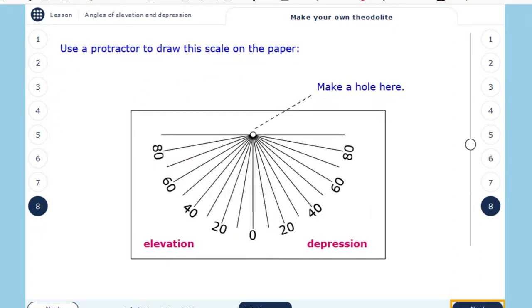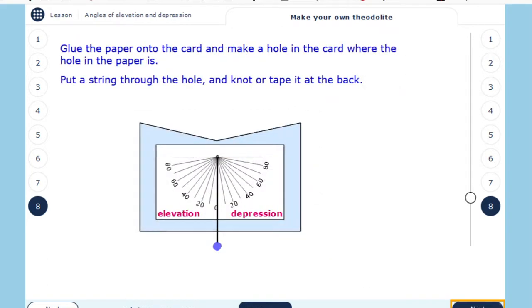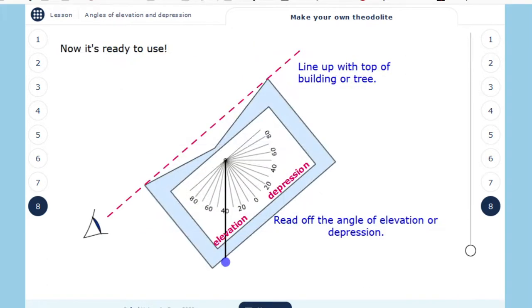You will make a hole there on the paper. So basically on the paper you just write all the angles. You have elevation and depression. Line up with the top of the building or the tree and you can find the angle of depression or elevation.